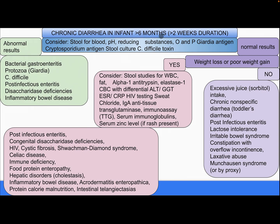For chronic diarrhea in infants more than six months of age, consider stool for blood, pH, reducing substances, ova and parasites, Giardia antigen, Cryptosporidium antigen, stool culture, and C. difficile toxin. If results are abnormal, differential diagnosis includes bacterial gastroenteritis, protozoa/Giardia, C. difficile, post-infectious enteritis, disaccharidase deficiency, and inflammatory bowel disease.